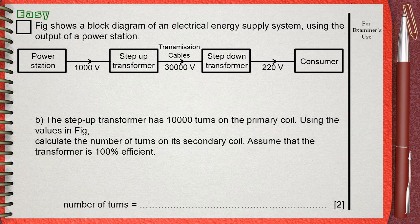The step-up transformer has 10,000 turns on the primary coil. Using the values in figure, calculate the number of turns on its secondary coil. Assume that the transformer is 100% efficient.